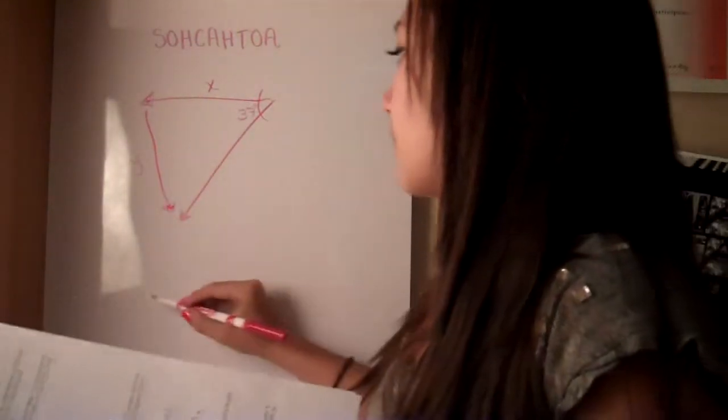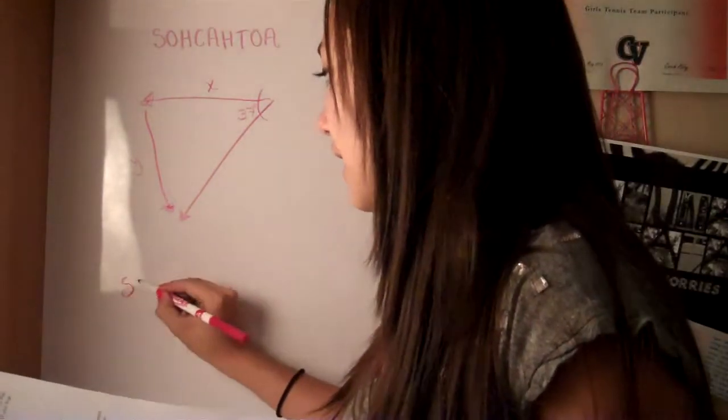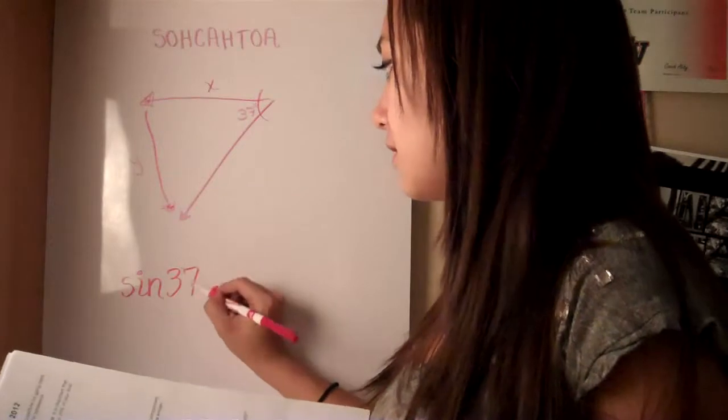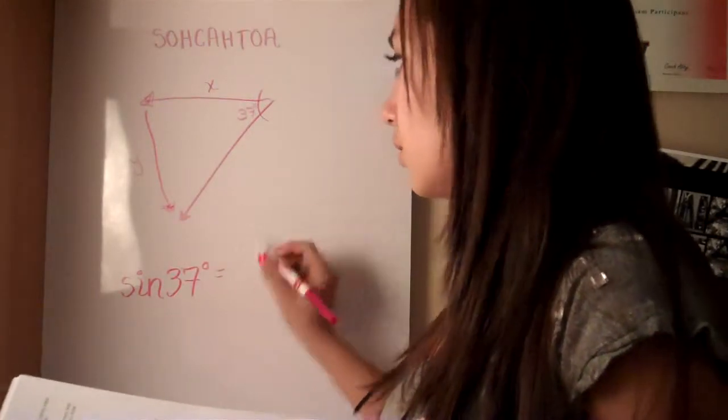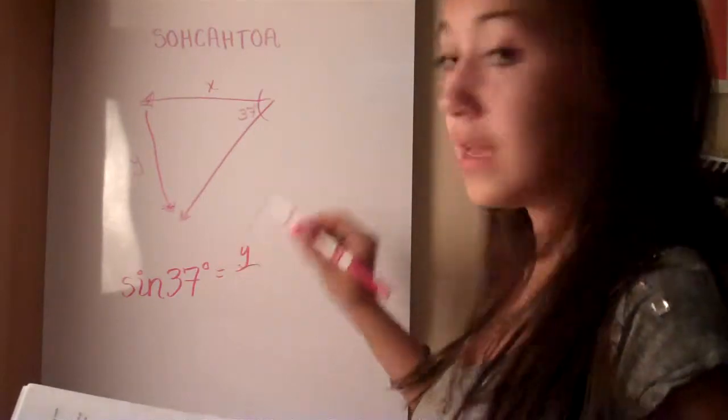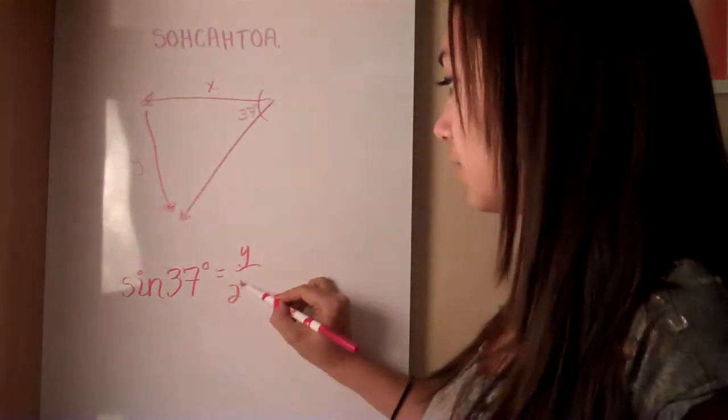So then you have to find the y component. So you use sine of 37 equals opposite, so y, over the hypotenuse, which is 25 newtons.